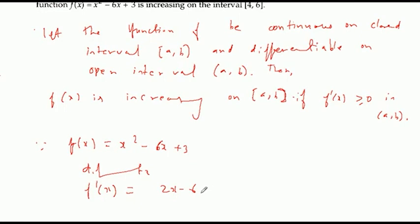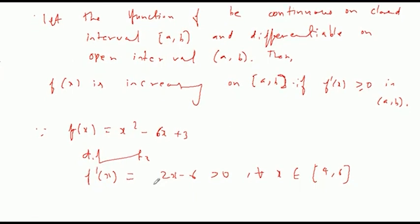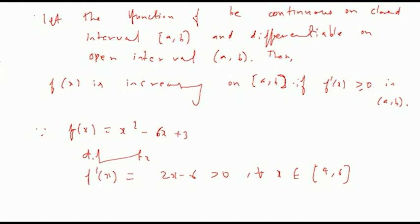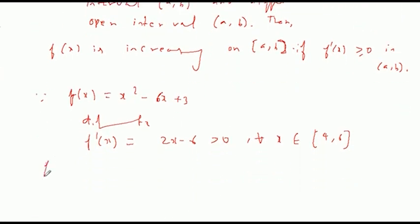For critical points, f'(x) = 0, which means 2x - 6 equals zero, so x equals 3.